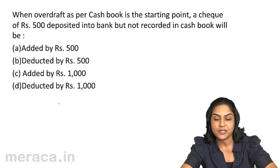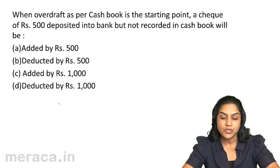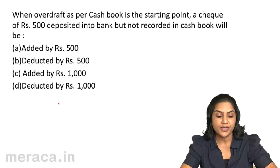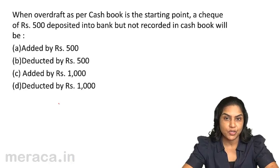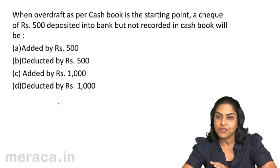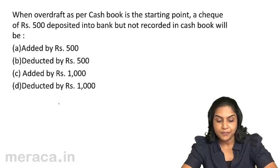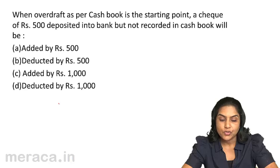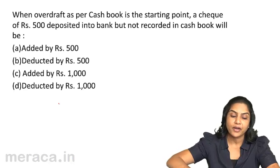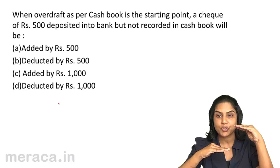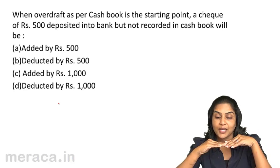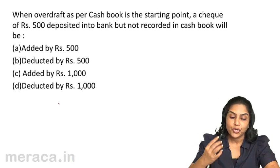When the overdraft as per pass book is the starting point: a check of rupees 500 deposited into the bank but not recorded in the cash book. When we said a single item is being mentioned — if you start from the overdraft, whatever you do in case of a favorable balance, you will do the reverse in case of an overdraft. So when there is an overdraft as per pass book, a check of rupees 500 deposited into the bank account but not recorded in the cash book — if we were starting from the cash book, we would go to the pass book and deduct. Since it is an overdraft, we do the opposite and therefore we will add.